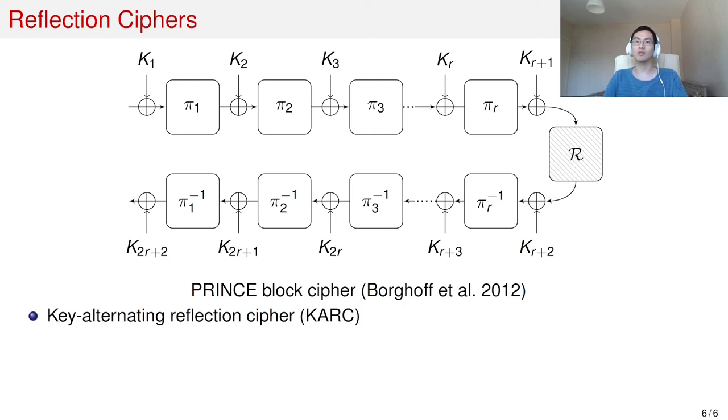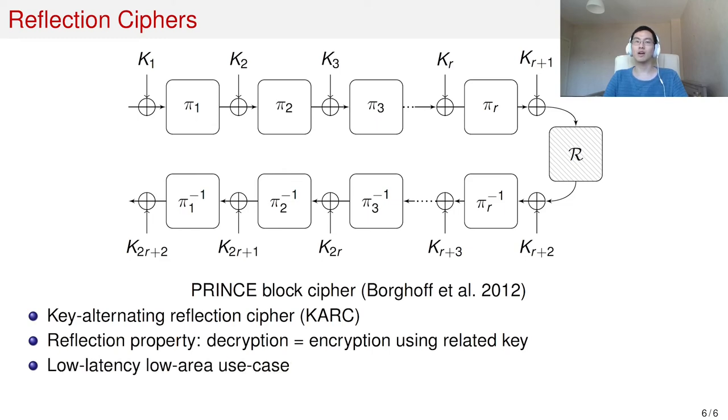Ciphers based on this structure have the following reflection property: decryption is always equal to encryption using related keys. Because of this special property, reflection ciphers are particularly suitable for low-latency, low-area use cases.